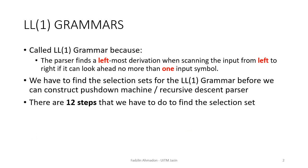Why exactly is LL1 grammar called LL1? This is because the parser will find a leftmost derivation when scanning the input from left to right, and it will look ahead at only one input symbol. For LL1 grammar, we still need to find the selection set before we can construct the push-down machine or recursive descent parser. However, in LL1 grammar, there are 12 steps that we need to follow in order to find the selection set.